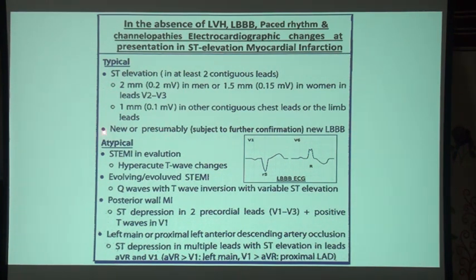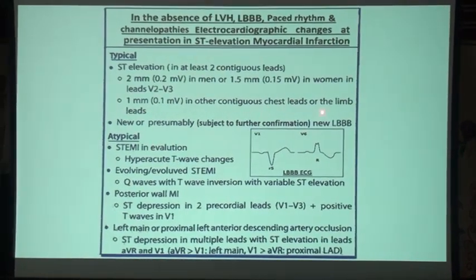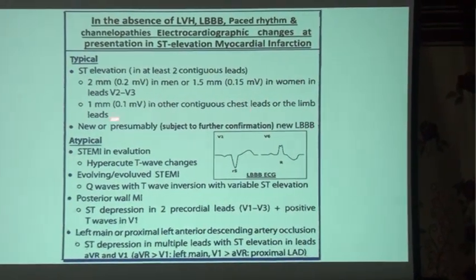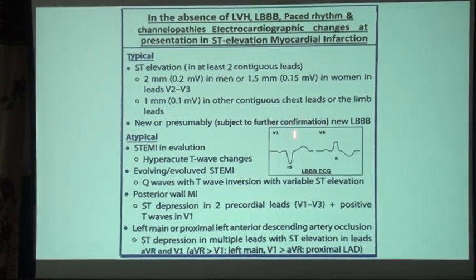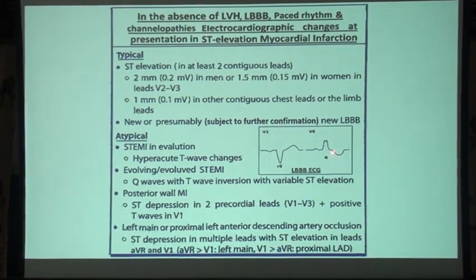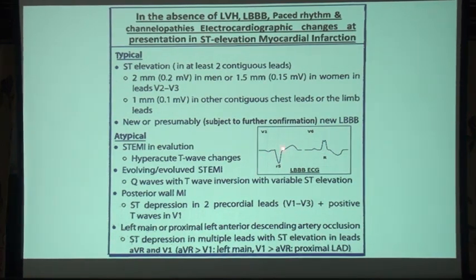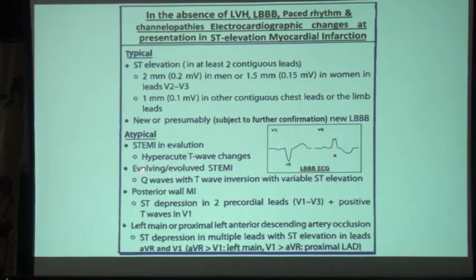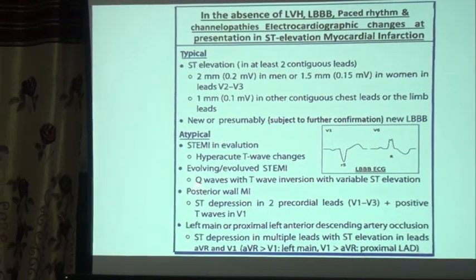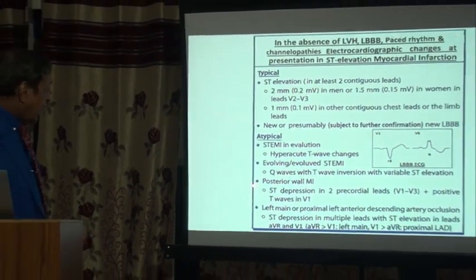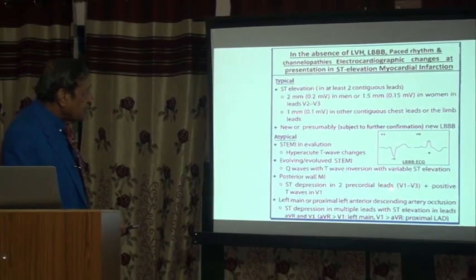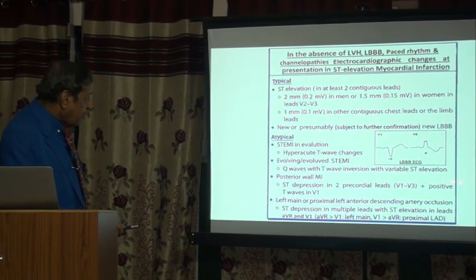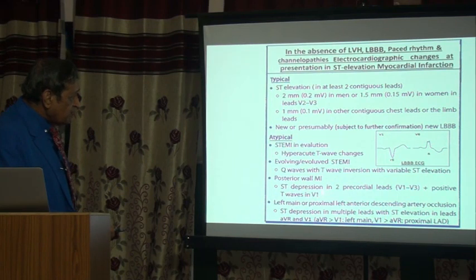New or presumably new left bundle branch block is also a sign of STEMI. In atypical cases, you can see broad QRS complexes in left bundle branch block from V1 to V6. Hyper-acute T wave changes are also a sign. In evolving or evolved STEMI, Q waves will be seen with T wave inversion and variable ST elevations. In posterior MI, there is ST depression in precordial leads V1 to V3 plus a positive T wave in V1 — meaning the T wave should be opposite to the QRS direction.